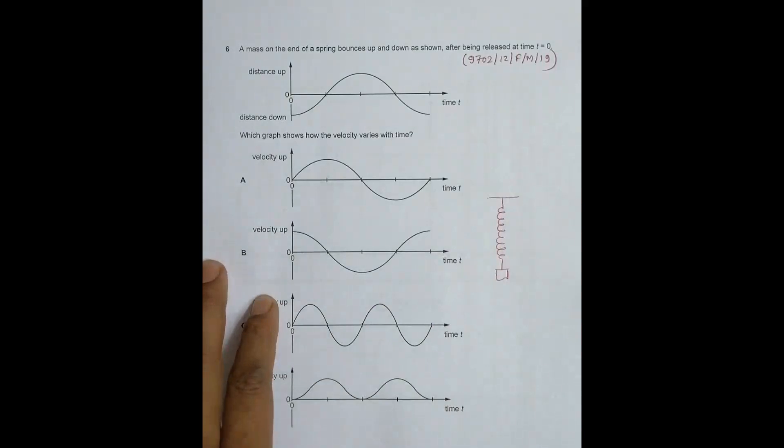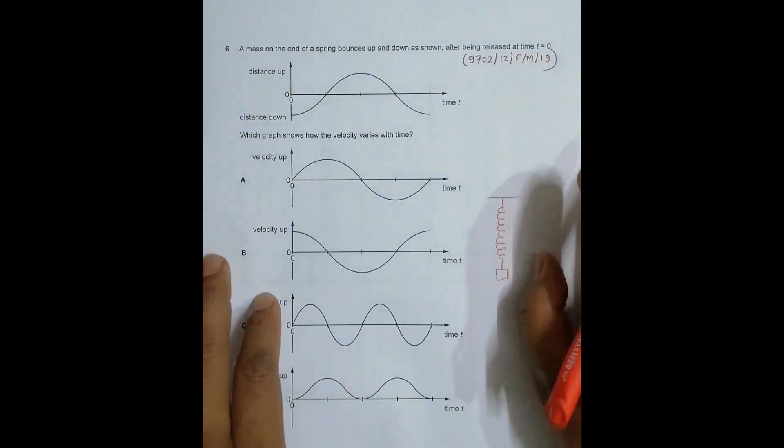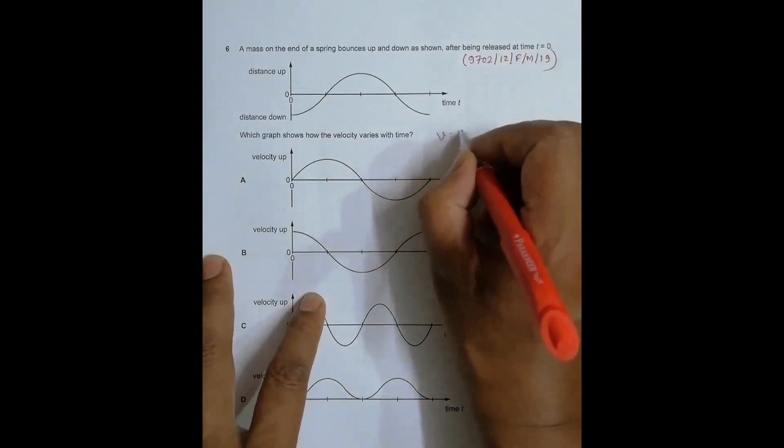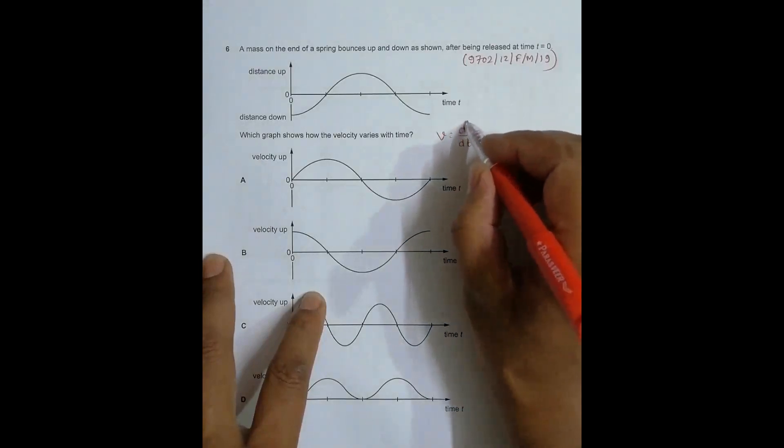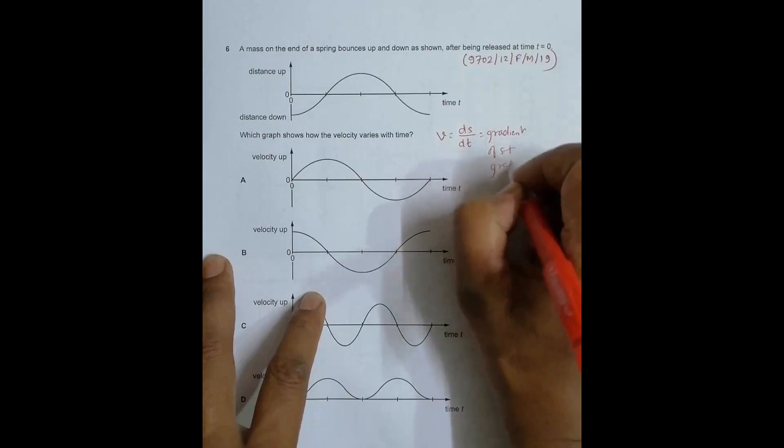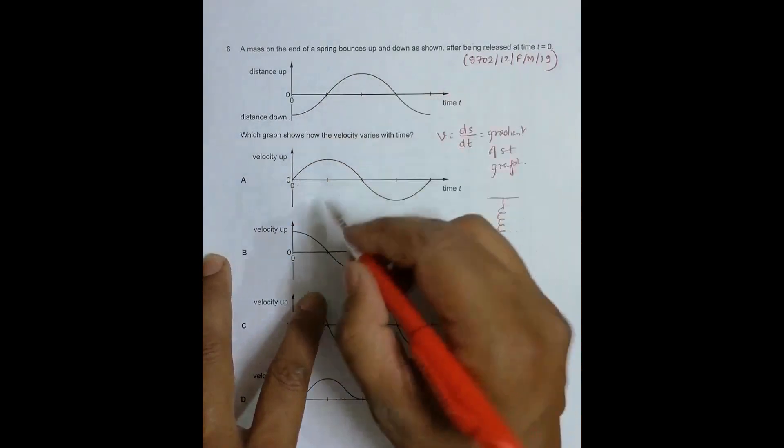This graph shows how velocity varies with time. Let's first be aware that velocity equals rate of change of displacement: ds/dt or dx/dt, which means that the slope of the s-t graph is equal to v. It's equal to the gradient of the s-t graph. So we can simply have an idea about the gradient to know the graph of velocity versus time.